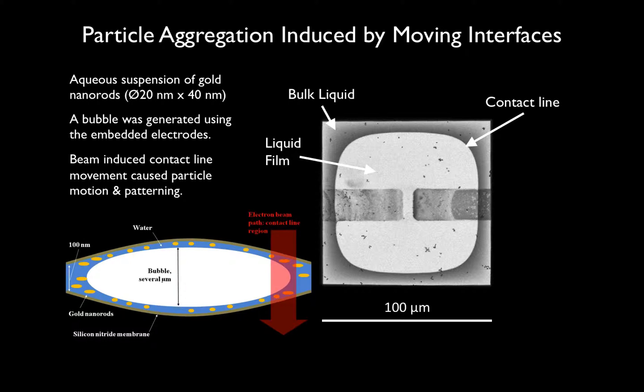One system I want to talk about is gold nanorods, 20 nanometers by 40 nanometers, provided by the Murray Group here at Penn. What we did is, with those integrated electrodes, we applied a bias to them to generate a large bubble. This bubble has been created by electrolysis. This gives us a nice platform where we have the opportunity to probe the interface by looking at the edge of this bubble. This bubble is going to be very large. You can see the size of this window is 100 microns, so the radius of this bubble is tens of microns. But we still have a liquid layer around the edge of the window.